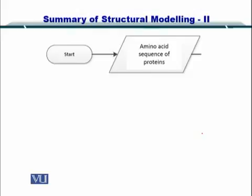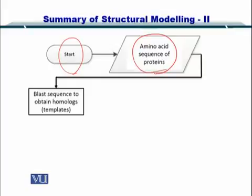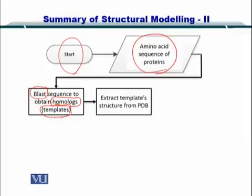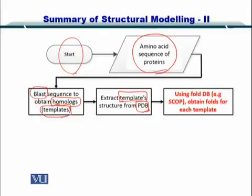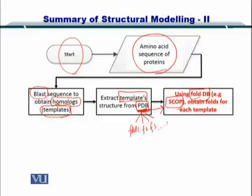Now let's take a look at a step-by-step flowchart. You start by looking at the sequence of these proteins. You find the homologs from the sequence databases by BLASTing them — these are called the templates. Then you find the structures of each one of these templates from the PDB, and these PDB structures are searched in the fold database such as SCOP. For each PDB file you will have multiple folds: fold 1, fold 2, fold 3 — giving you a list of folds that each structure has.